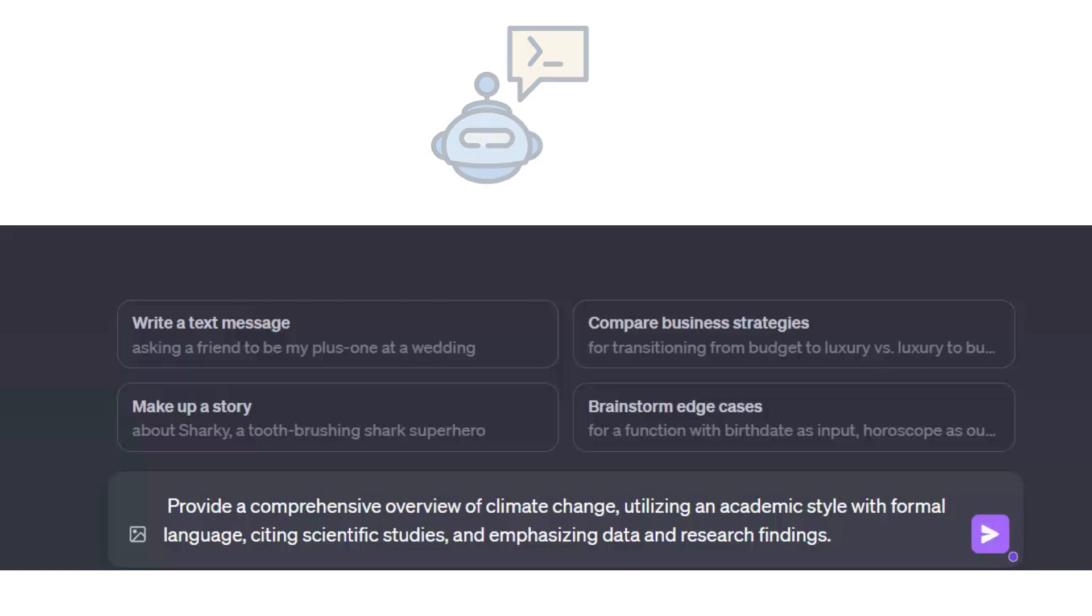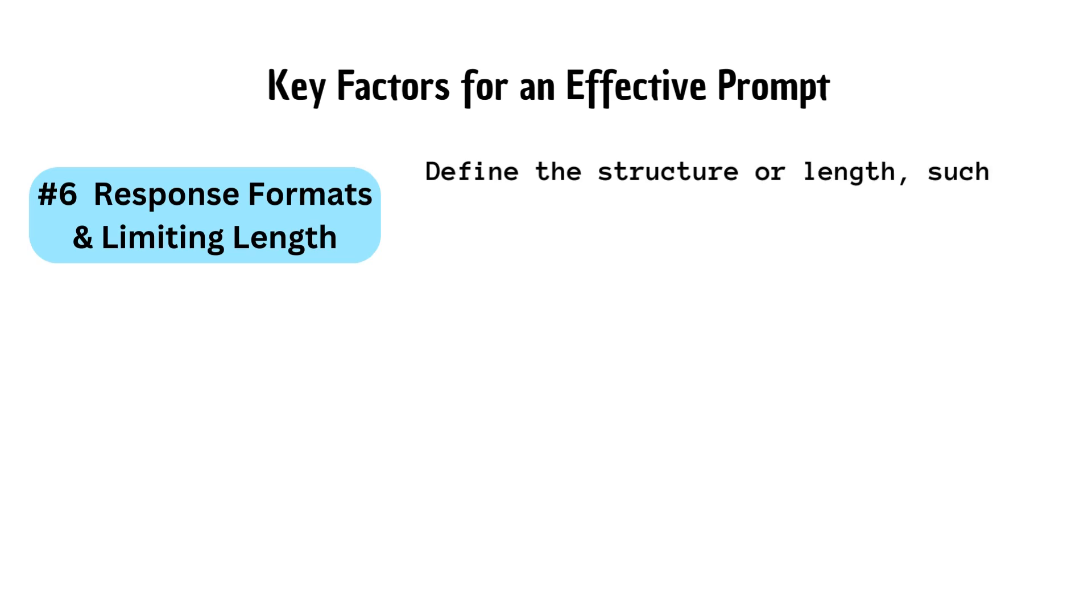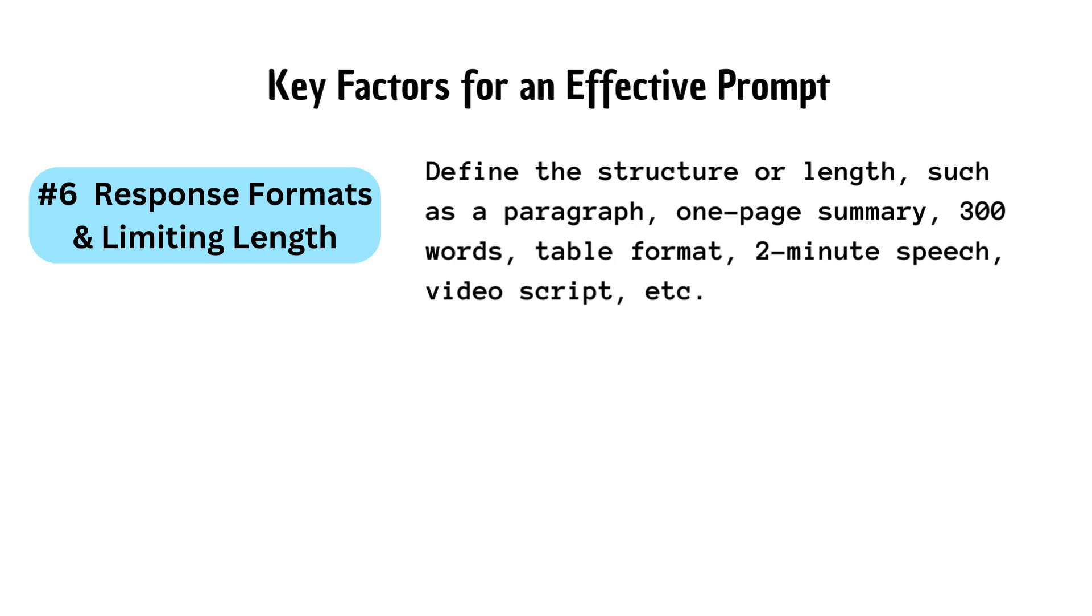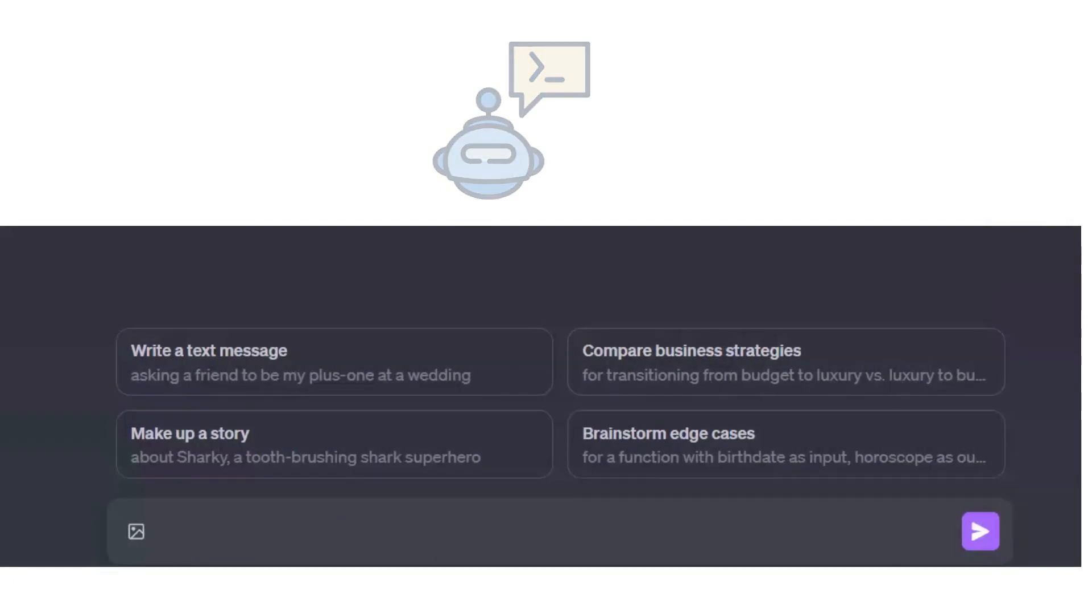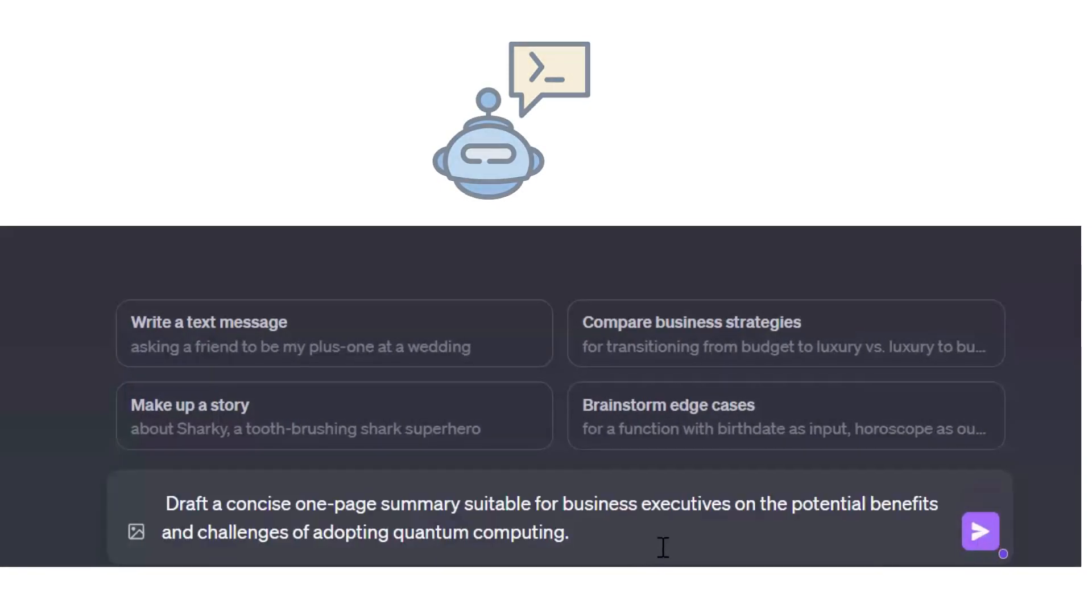Key factors for an effective prompt, number six is response formats and limiting length. Define the structure or length, such as a paragraph, one-page summary, 300 words, table format, two-minute speech, video script, etc. For example, a basic prompt: What is quantum computing? The refined prompt: Draft a concise one-page summary suitable for business executives on the potential benefits and challenges of adopting quantum computing.